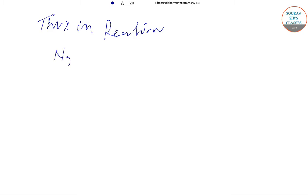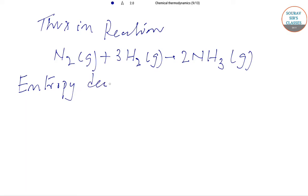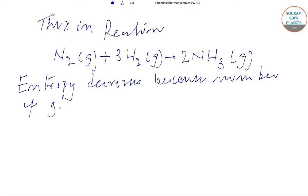In the reaction, we have N2 (gas) plus 3H2 (gas) giving 2NH3 (gas). Entropy decreases because the number of gaseous molecules decreases — from 4 moles on the reactant side to 2 moles on the product side.